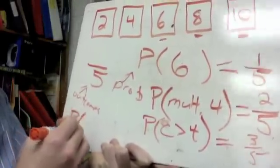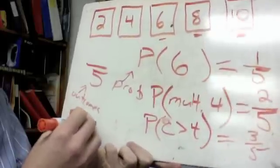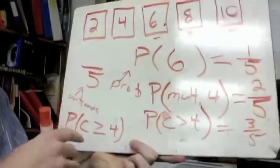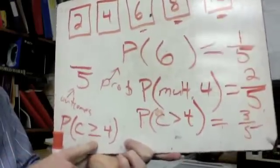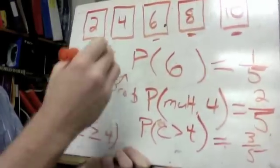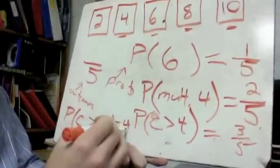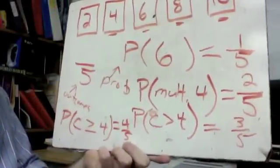And we'll do one more here. Probability, and this will be a little bit different, of getting a card greater than or equal to four. Remember that little line underneath is or equal to. Now, if it's or equal to, we can include the four along with the other ones. So our probability is going to be four out of five.